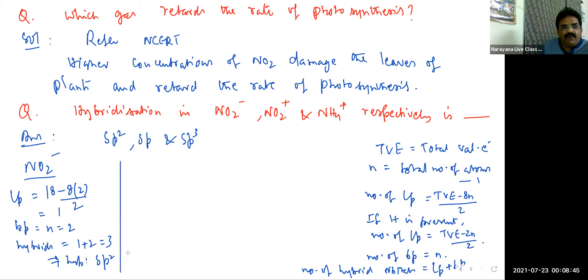Next, we have NO2 plus. Again, number of lone pairs, total valency electrons: 5 plus 12, 17, and 1 plus charge is there, so 17 minus 1, 16 minus 8N. Again, the number of atoms are 3 minus 1, that is equal to 2. So 8N means 8 times 2, divided by 2.